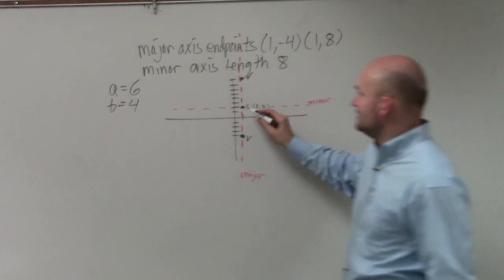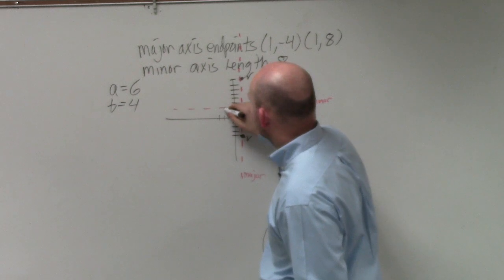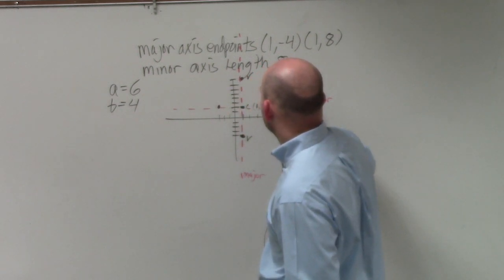So you guys could see that the minor axis would be 1, or 2, 3. 1, 2, 3, 4. 1, 2, 3, 4. Those would be your co-vertices.